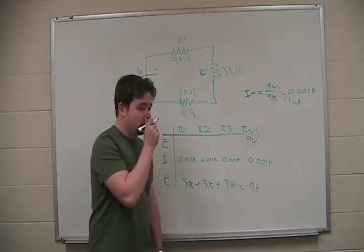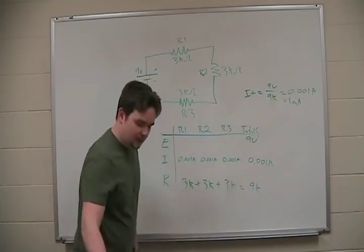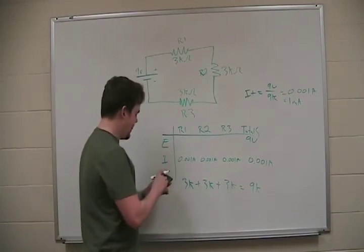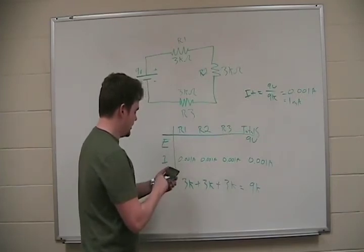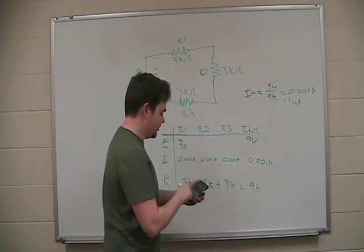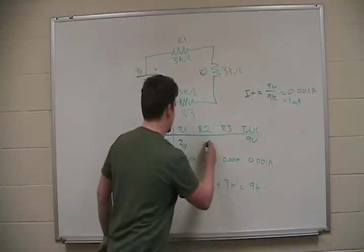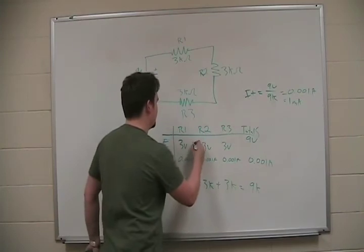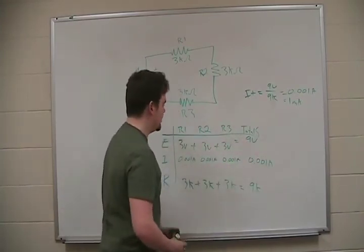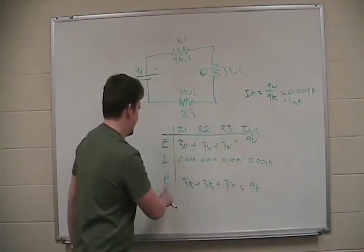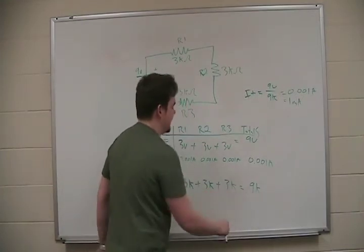So, let's use our calculators. E equals I times R. Remember the triangle. E equals I times R. So, 0.001 times 3,000 equals 3 volts. And since all the values are the same, let's do it again. 0.001 times 3,000. 3 volts. Same thing here. 0.001 amps times 3,000 equals 3 volts. 3 volts plus 3 volts plus 3 volts equals 9 volts. So, you see the total voltage in a series circuit is cumulative. R1 plus R2 plus R3 equals voltage total. Same thing with resistance. 3K plus 3K plus 3K equals 9K total resistance.